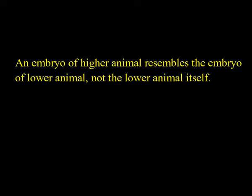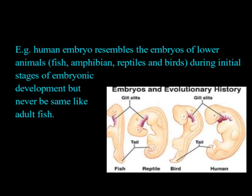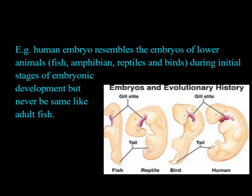The last principle is that an embryo of a higher animal resembles the embryo of a lower animal, not the lower animal itself. For example, the human embryo resembles the embryos of lower animals — fish, amphibians, reptiles, and birds — during initial stages of development, but is never the same as an adult fish.